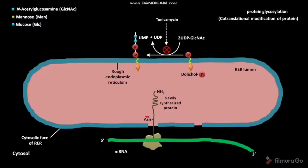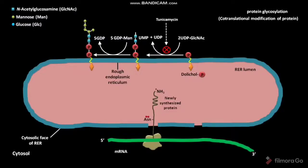Then, in a biochemical reaction, 5-GDP-mannose is converted into 5-GDP. In the same reaction, the oligosaccharide is added with 5 mannose residues to form the 7-residue dolicol pyrophosphoryl intermediate. This is the second step of protein glycosylation, and it also occurs on the cytosolic phase of the RER.